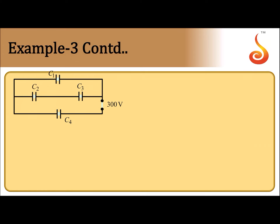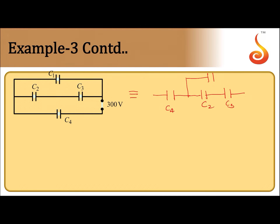So the given circuit is like this — I can rewrite this. I will write C4 here, then C2 and C3; this is C2, this is C3, this is C4, and here is C1. The given circuit can be modified like this, and it is connected to a 300 volt supply.